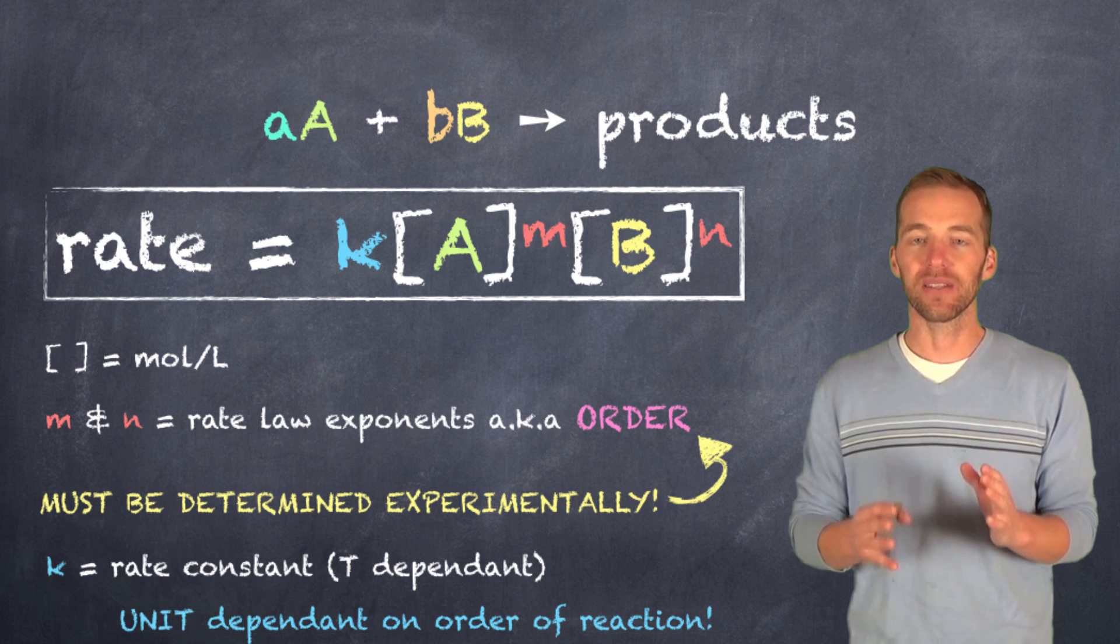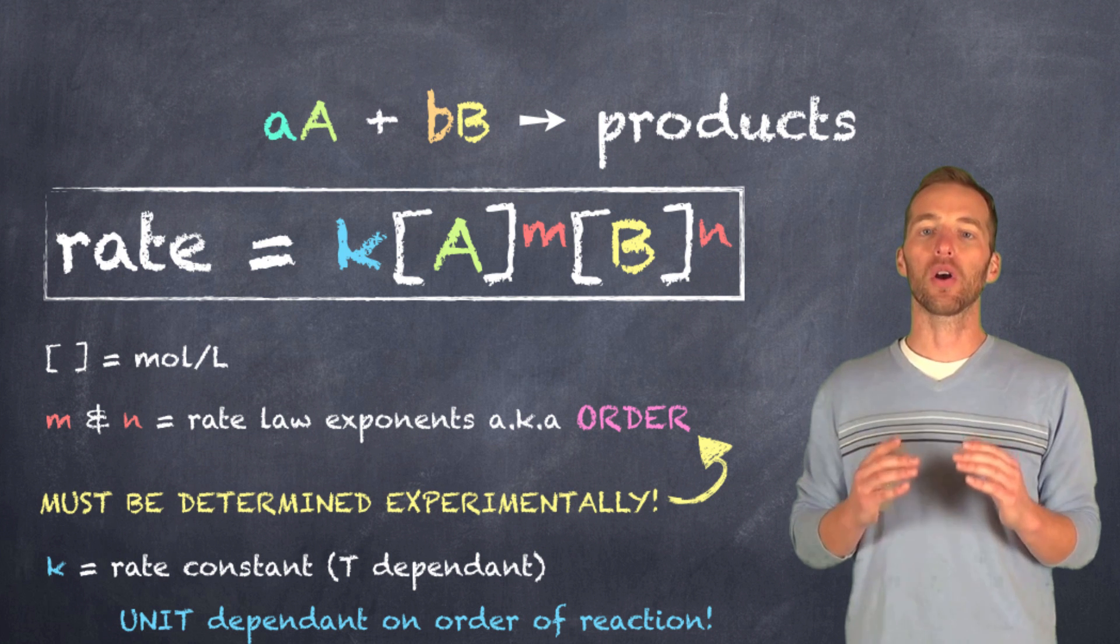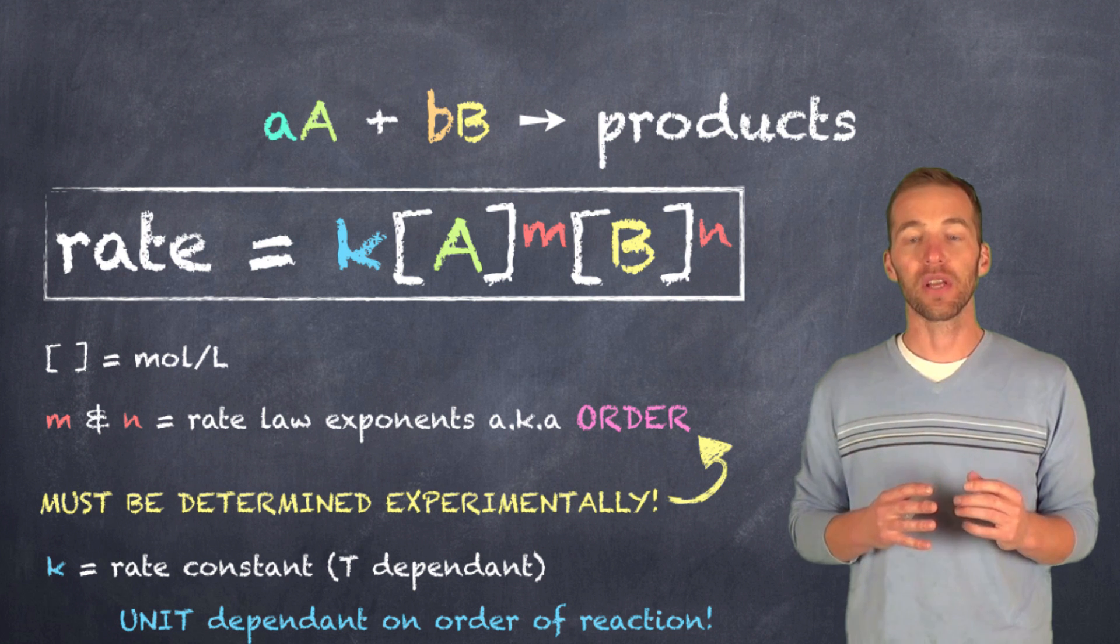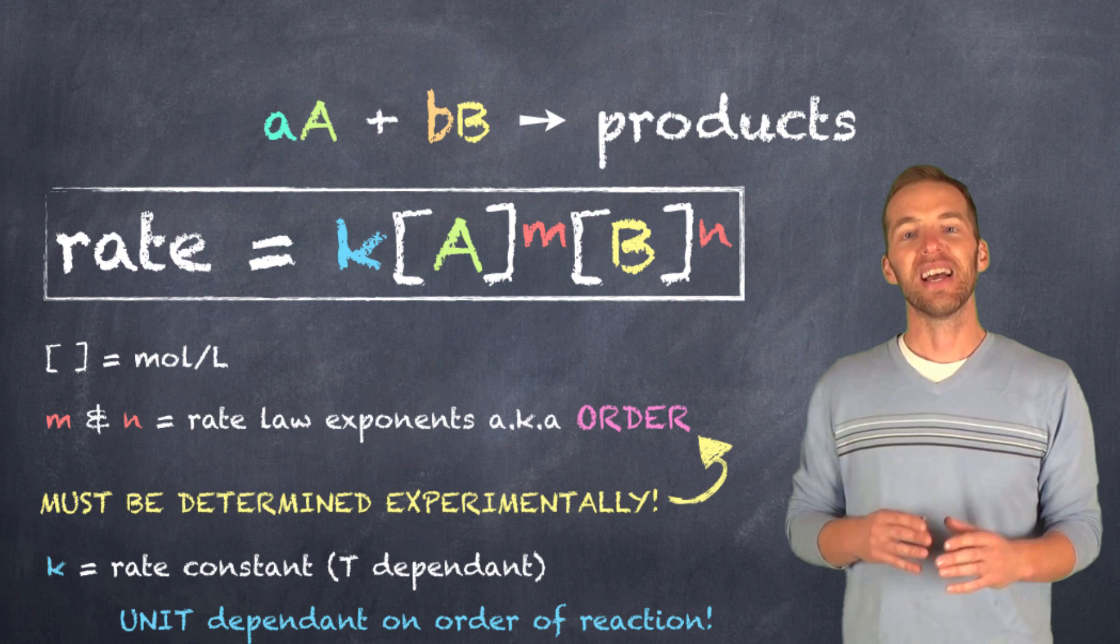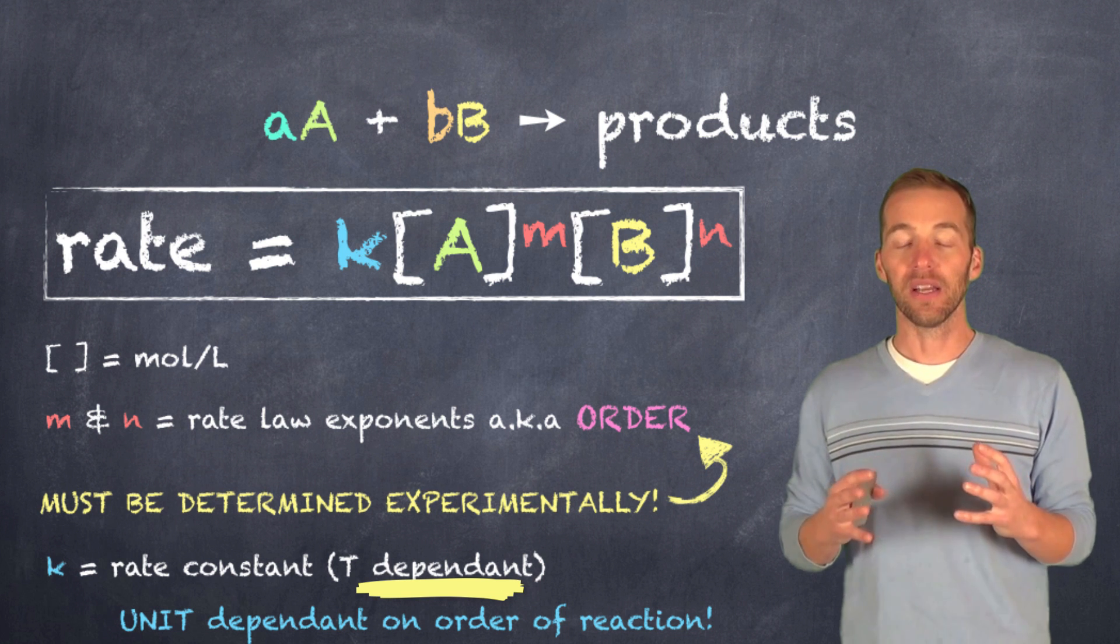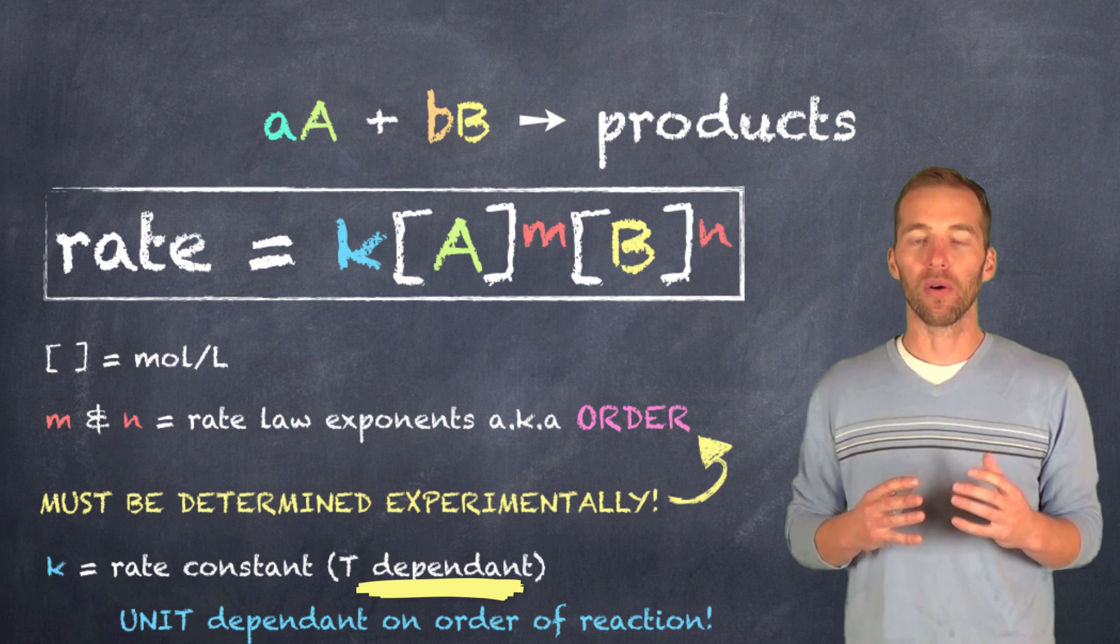But I want to focus a little bit on K, because K is referred to as the rate law constant. And obviously, that constant is going to be different for various reactions. The other thing that's important about K is that it's temperature dependent. That means that K is going to vary depending on the temperature of that overall reaction.